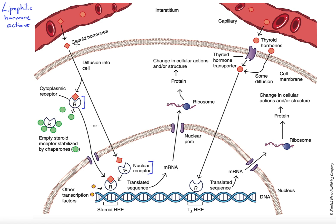On the left here, let's look at the steroid hormones for a moment. Steroid hormones tend to enter the cell and bind receptors that are initially stabilized by what are referred to as chaperone proteins. These chaperone proteins basically inhibit the receptor from activating the cellular response prior to actually binding the hormone.